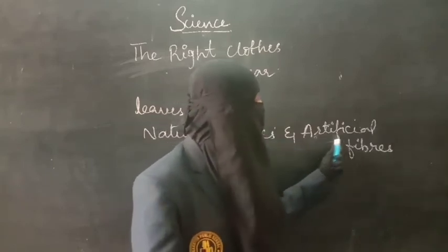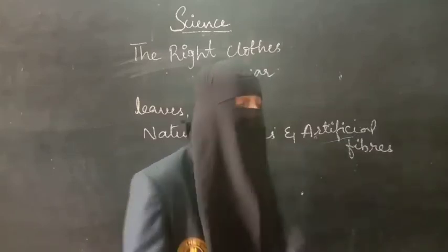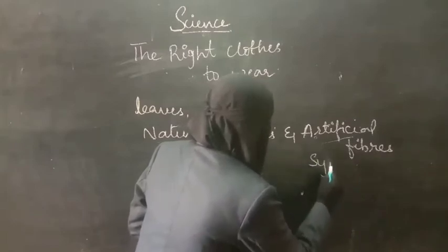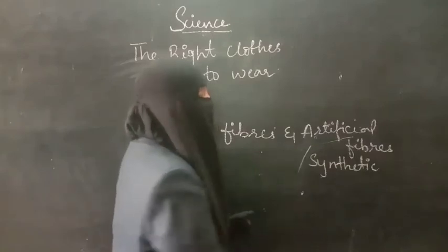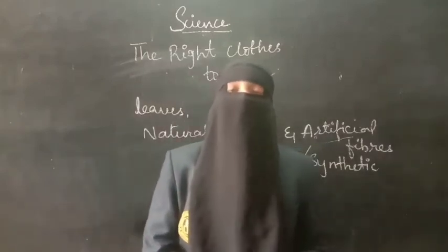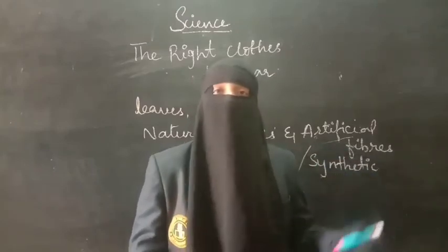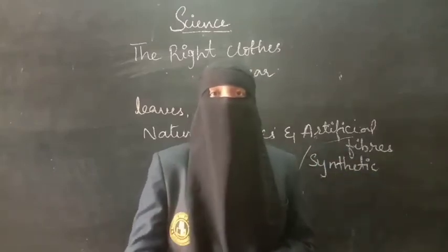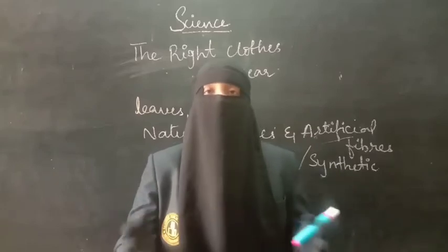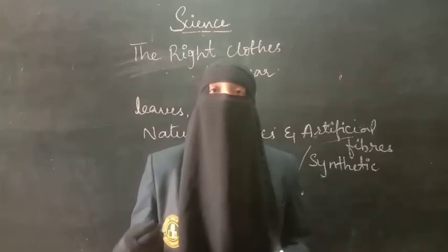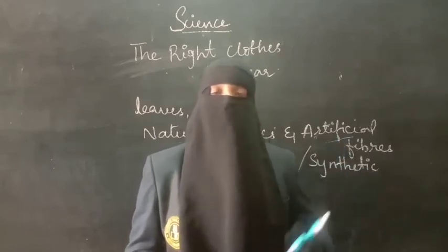Artificial fibers are also called synthetic fibers. These are obtained from chemicals. Artificial fibers include polyester, nylon, and acrylic — these are obtained from chemicals. When two or more chemicals are combined together, they produce a fabric, and that fabric is the artificial fiber or artificial fabric.